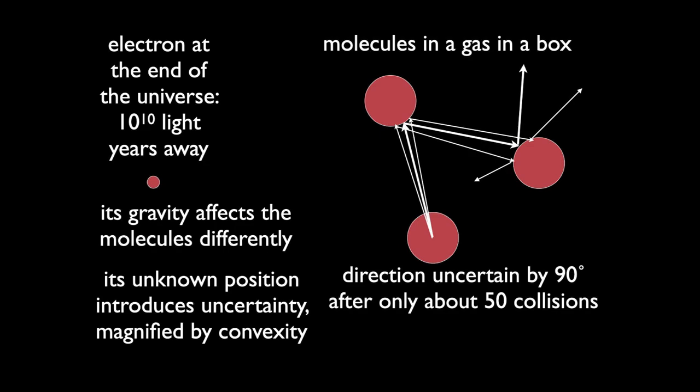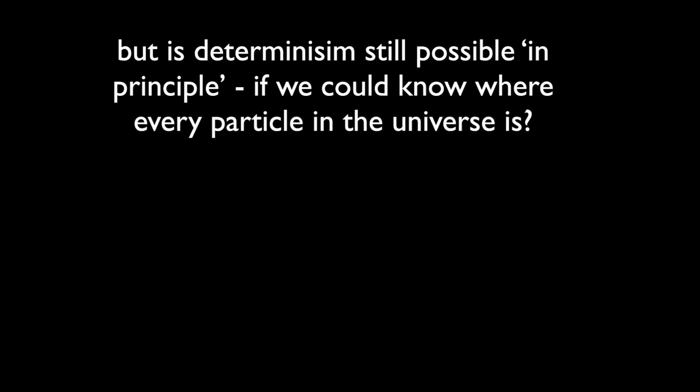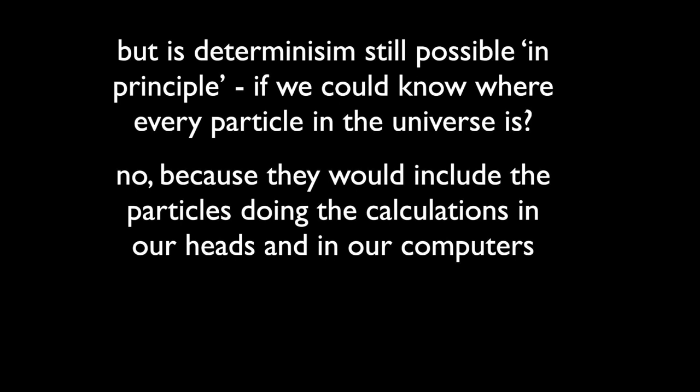After how many collisions is the emergent direction uncertain by 90 degrees? You can call that loss of predictability. The answer is about 50 — it takes place in a nanosecond or so. Incredible sensitivity to initial conditions. If you're a billiards player, your gravity around the billiard table would make the ball's direction uncertain after about 10 collisions. No billiards player can reliably plan a shot of more than about two collisions. Is it possible in principle? The answer is no, because that would include the particles in the computers doing our calculations or in our heads, giving rise to contradictions. So even in principle, Laplace's idea doesn't hold true in Newtonian mechanics when you have chaos. Classical physics is not deterministic; classical mathematics, of course, is.